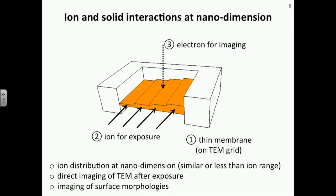This is what we used in our study. First, we fabricated the thin membrane by focused helium ion beam, because it can control the geometry of the nanostructure. We can control the thickness and shape, allowing us to study geometry-dependent characteristics. We first fabricated the thin membrane, then exposed the ion onto the top of the membrane. We can control the position where the ion is irradiated. Then we move to the electron microscope and try to estimate the distribution of the ion beam.